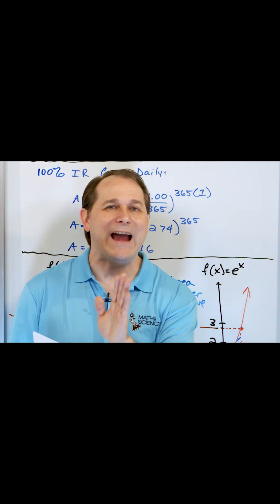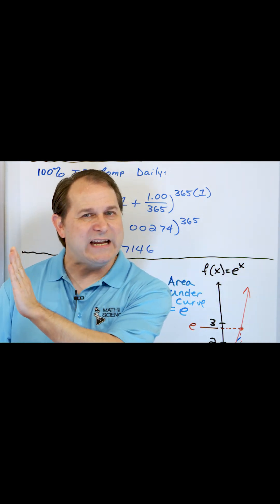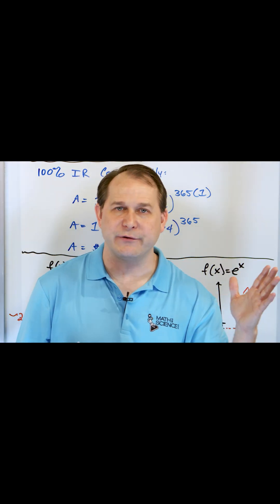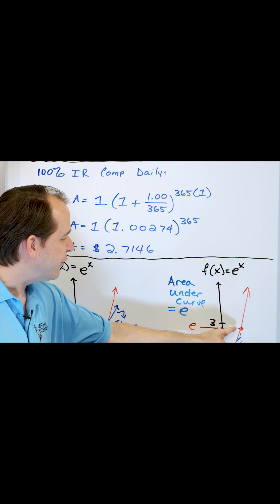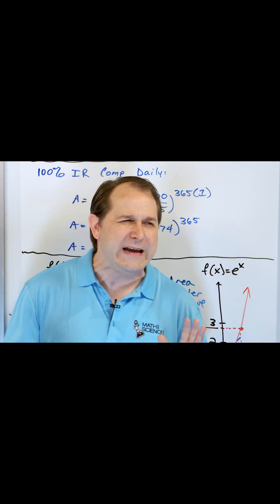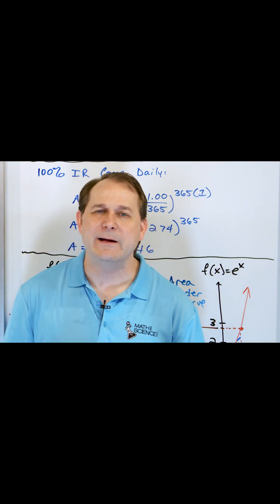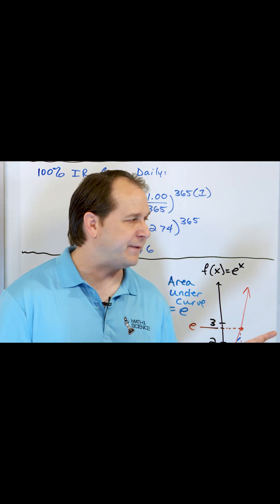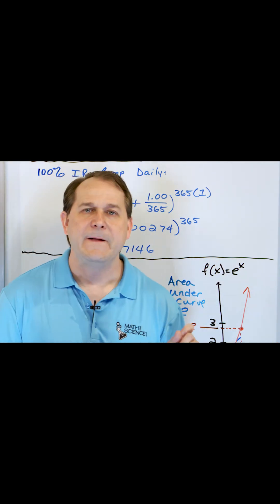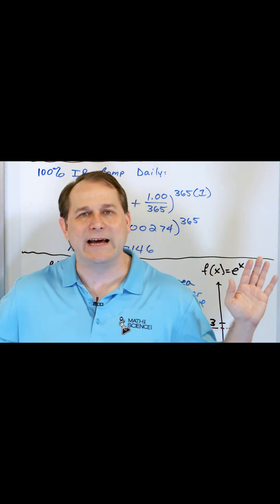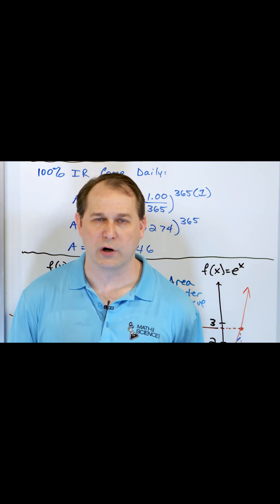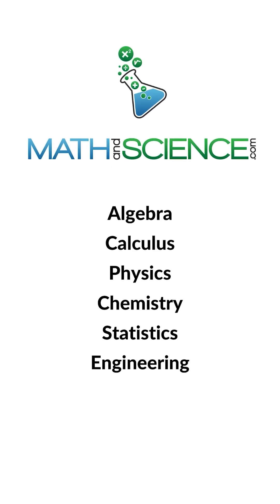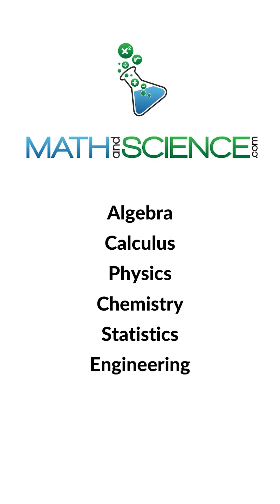Also, the area under the curve from negative infinity all the way up to any point you want to pick on that curve — the area under it is also equal to the value of the curve itself. So it's a really special function. The reason it pops up that way is because the base of this exponential function is a very special number — the number that pops out by looking at the natural course of exponential growth. And so that's Euler's number. Learn anything at mathandscience.com.